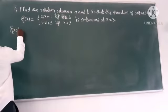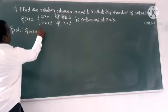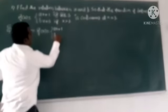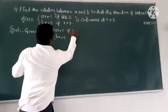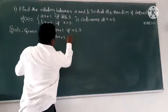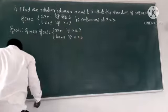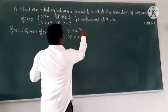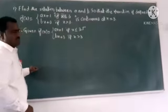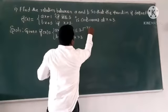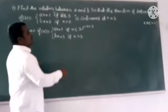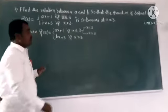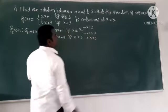Given: f(x) equals ax plus 1, and bx plus 3, with the piecewise conditions. The three conditions are: x less than 3, x equals 3, and x greater than 3. These class intervals are most important, as we split them up in the last class.